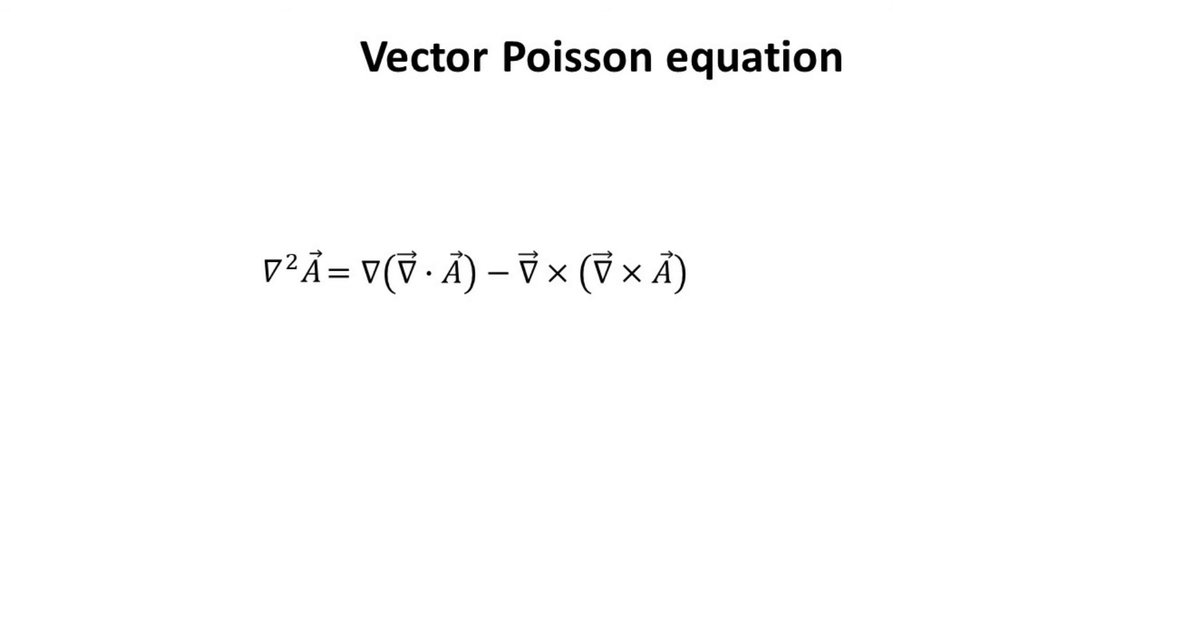We are now ready to derive the analogous Poisson equation for the magnetic field. We begin with the definition of the vector Laplacian on our vector potential A.